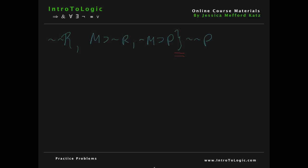Here's another example. Once again we have the argument written into sequent form. We have our premises on the left-hand side and our conclusion on the right-hand side. The first thing we're going to do is draw a scope line and write our assumptions.